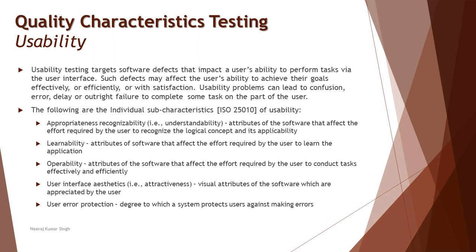Usability testing generally targets software defects that impact a user's ability to perform certain tasks via the user interface. Such defects may affect the user's ability to achieve their goals effectively, efficiently, or with satisfaction — these are the three major attributes of user friendliness. Usability problems can lead to confusion, error, delay, or outright failure to complete tasks, causing users to abandon your product and adopt a competing application.